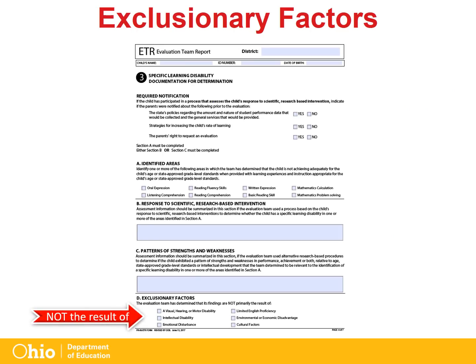The team must determine that its findings are not primarily the results of a visual, hearing, or motor disability, intellectual disability, emotional disturbance, limited English proficiency, environmental or economic disadvantage, or cultural factors. Appropriate assessments must be conducted to rule out these factors as primary effects causing the apparent disability.